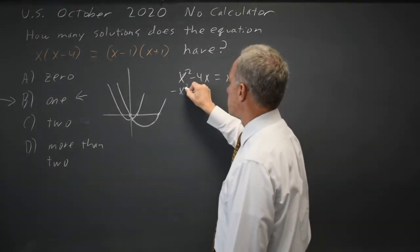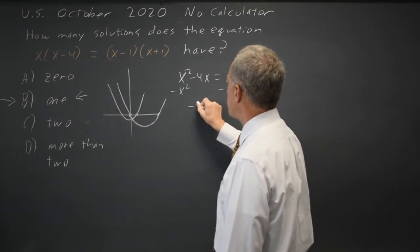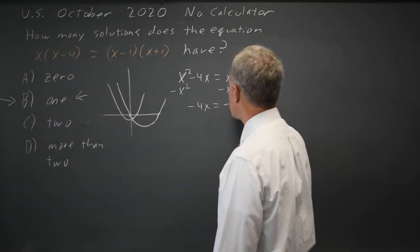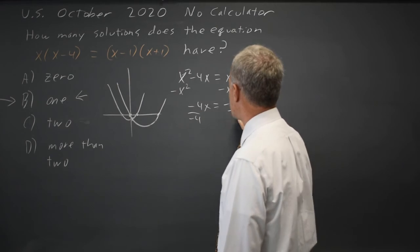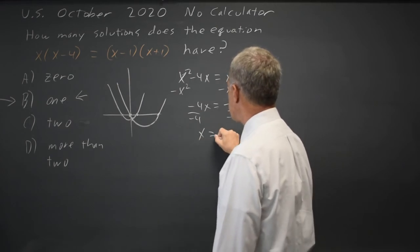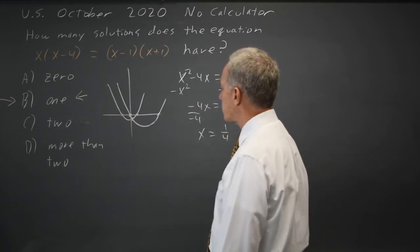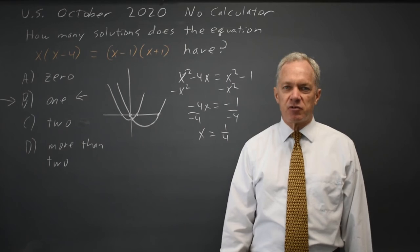If I subtract x squared from both sides, I get negative 4x equals negative 1, divided by negative 4. The only solution is that x equals 1 fourth, as we estimated from the sketch.